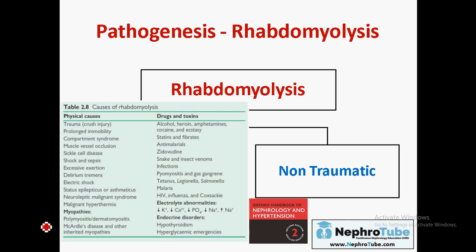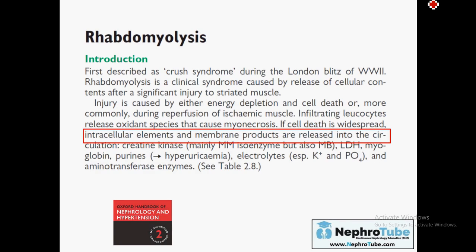The end result in both traumatic and non-traumatic rhabdomyolysis is the same, but the start is different. In traumatic, there is direct trauma to the cell; in non-traumatic, cell death occurs by a different mechanism — affecting the ATP storage of the cell. Non-traumatic causes include myopathies, drugs and toxins, electrolyte disturbances (hypokalemia, hypercalcemia, hypophosphatemia, hyper- or hyponatremia), endocrinological causes such as hypothyroidism and hyperglycemic emergencies, and viral infections. The final result is release of intracellular elements into the circulation.